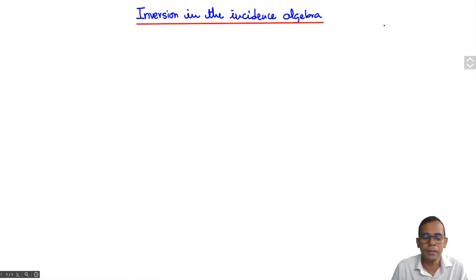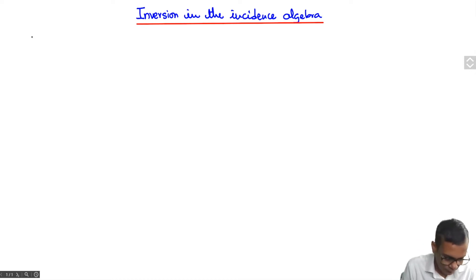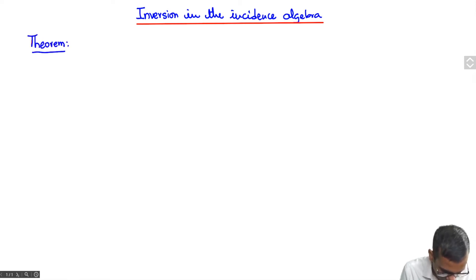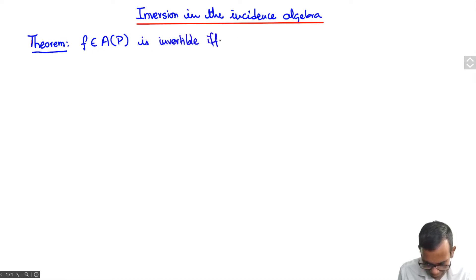In this lecture we are going to study multiplicative inverses in the incidence algebra. The question is which elements in the incidence algebra admit multiplicative inverses. We saw last time that elements of the incidence algebra can be thought of as upper triangular matrices, and we know that an upper triangular matrix is invertible if and only if its diagonal entries are non-zero. So the following theorem should not come as a surprise: suppose we have a function f in the incidence algebra of a locally finite poset P, then it is invertible if and only if f(x,x) is non-zero for every x.